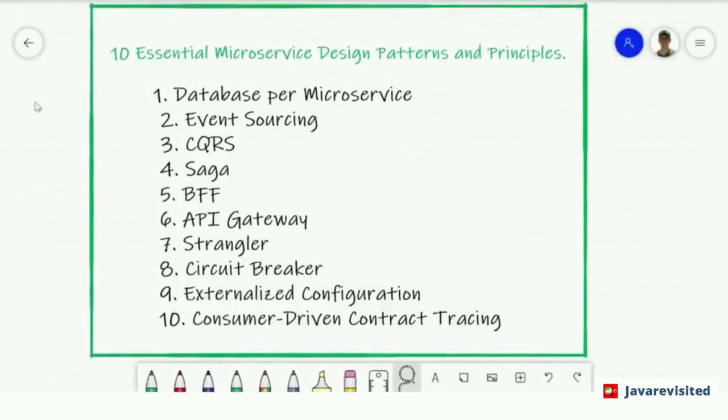What are the 10 essential microservices design patterns and principles? Number one, database per service. Event sourcing. CQRS command query segmentation pattern. Saga pattern. BFF backend for frontend. API Gateway. Strangler. Circuit Breaker. Externalized Configuration. Finally, consumer-driven contract tracing.